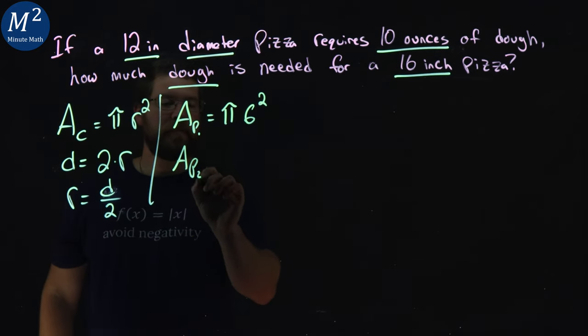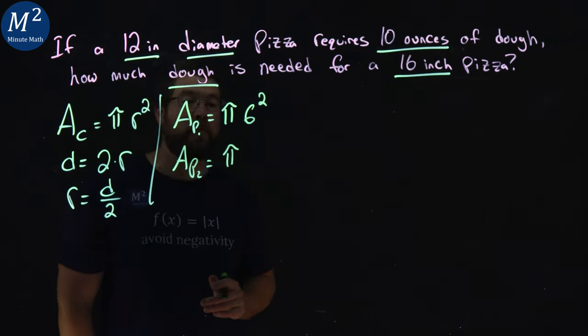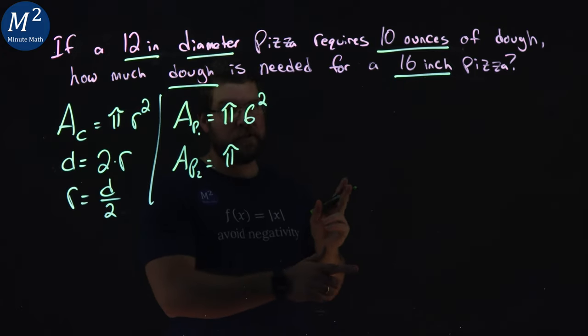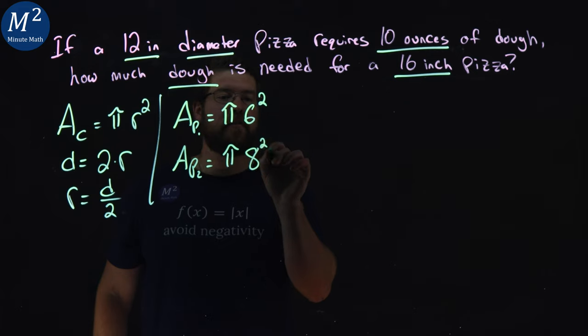Our pizza 2, our formula for the area is pi r squared. 16-inch pizza. Divide that by 2 gets us an 8 squared.